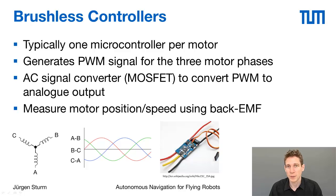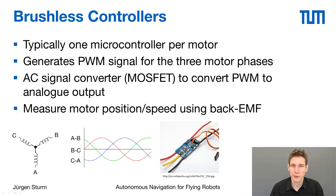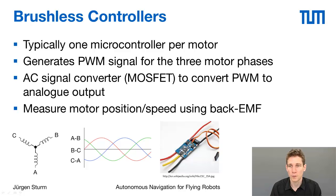For that you typically need a microcontroller that outputs a PWM signal for the three motor phases. This PWM signal can then be converted using an AC converter consisting of a capacitor and a MOSFET chip to improve the power output, since the microcontroller can't power the electromagnets directly. Running through the AC converter gives you an analog output — the three phases for the motor.